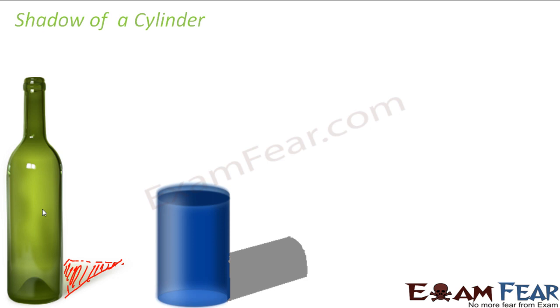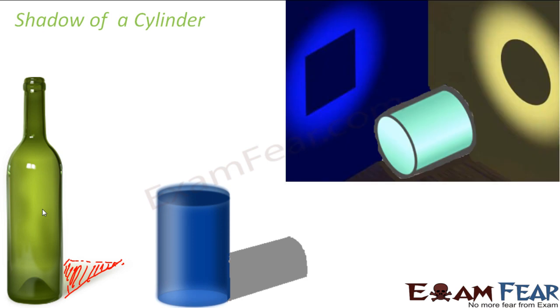So somewhat like this. When you look at the shadow of a three-dimensional cylinder, you see that you get a two-dimensional rectangle or sometimes you can also get a circle.